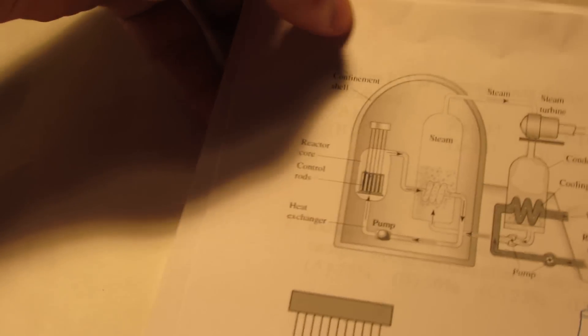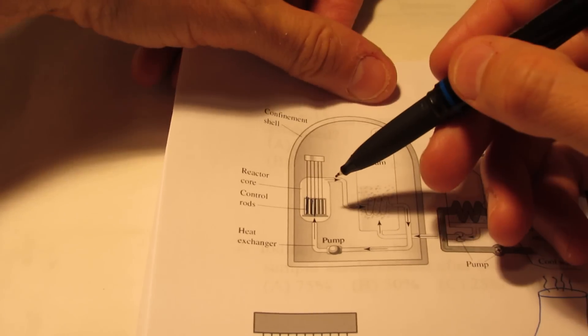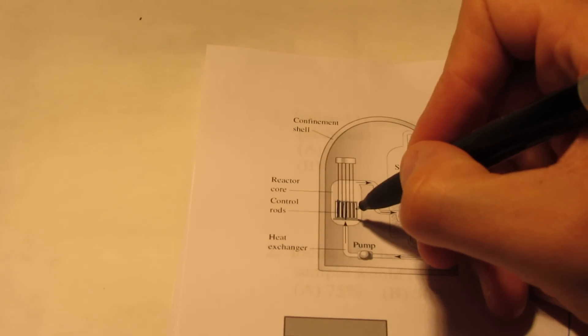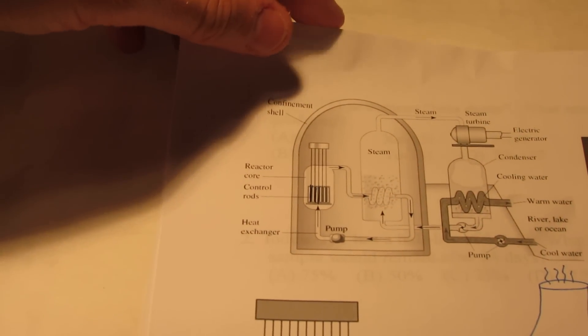So control rods are essential in controlling the fission reactions that occur. However, if the control rods are placed between the fuel rods, critical mass is not achieved and the reaction can stop.